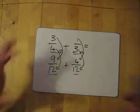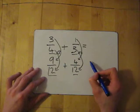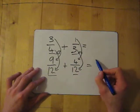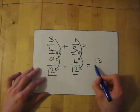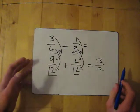And then, now we've got the same denominator, a dead symbol. Just add the top. 9 plus 4 is 13. And then, keep the bottom number the same. So it's 13 over 12.